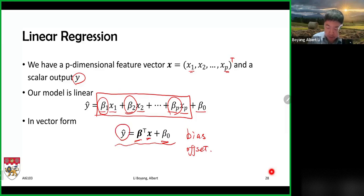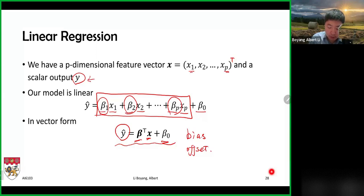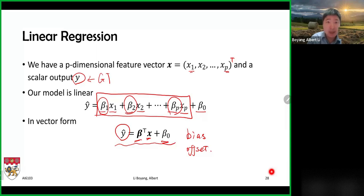I'm going to use y-hat to denote the prediction of the model, whereas the ground truth value is y without the hat. The hat is my way of saying this is a prediction — this is an estimate of the real value of y.